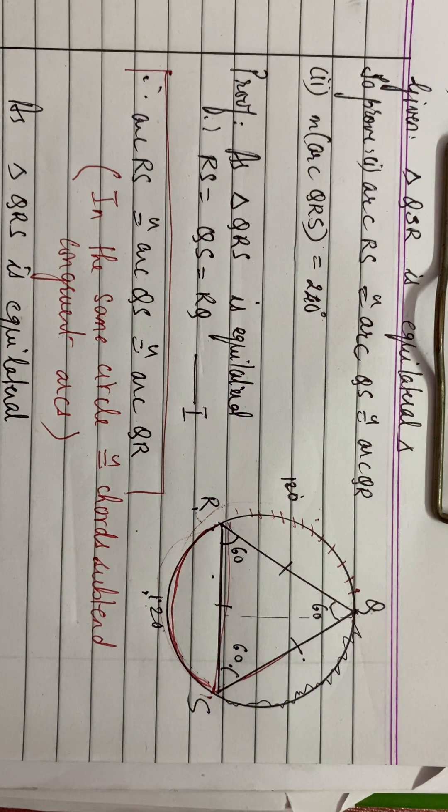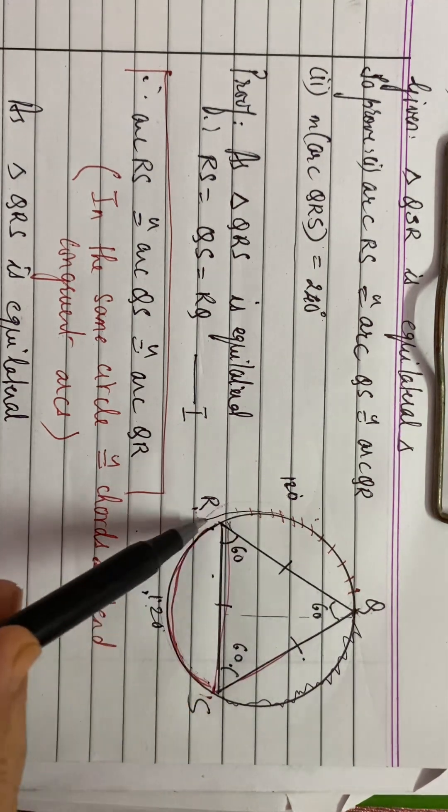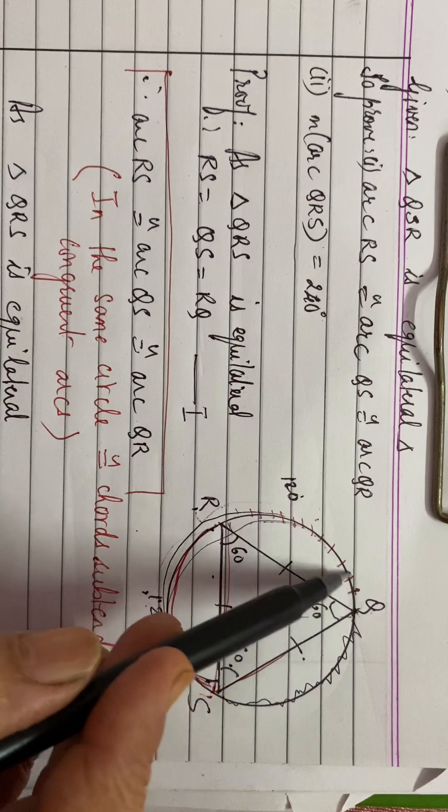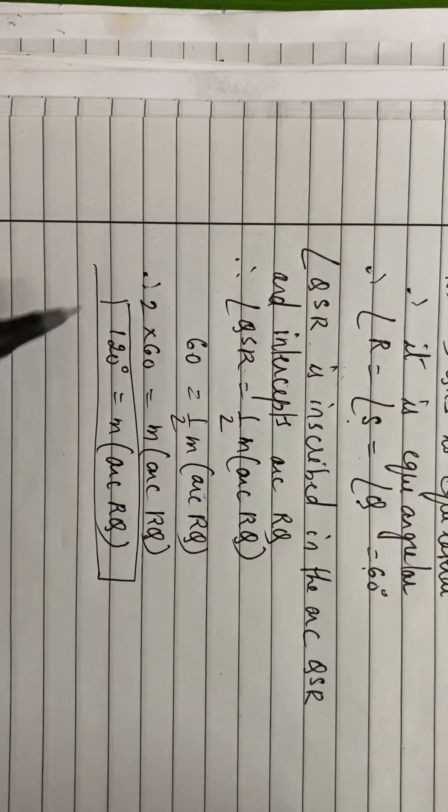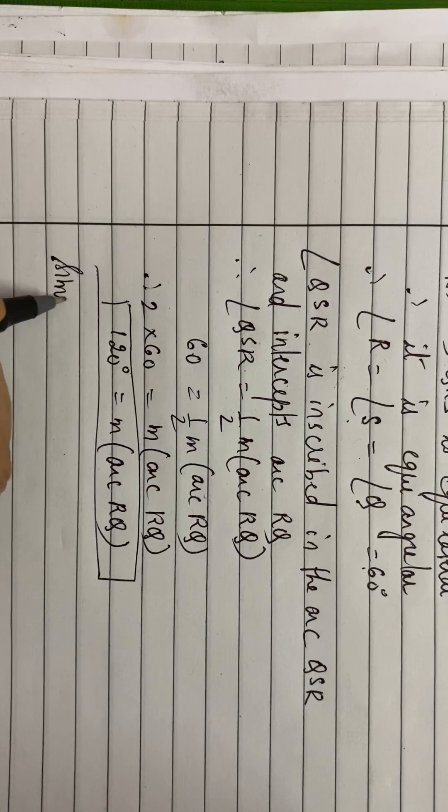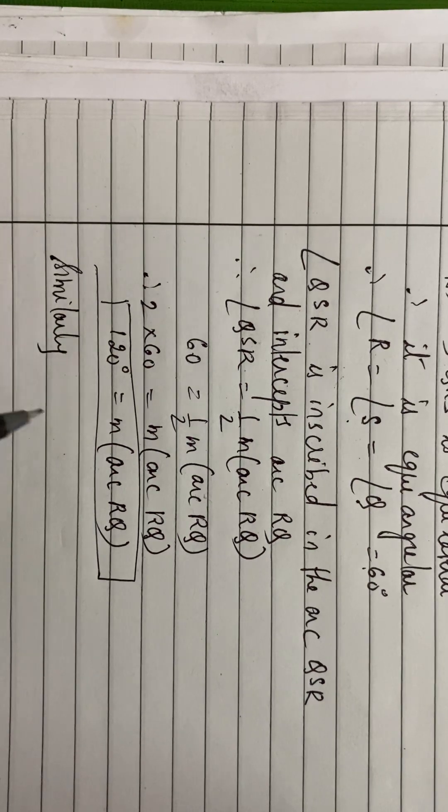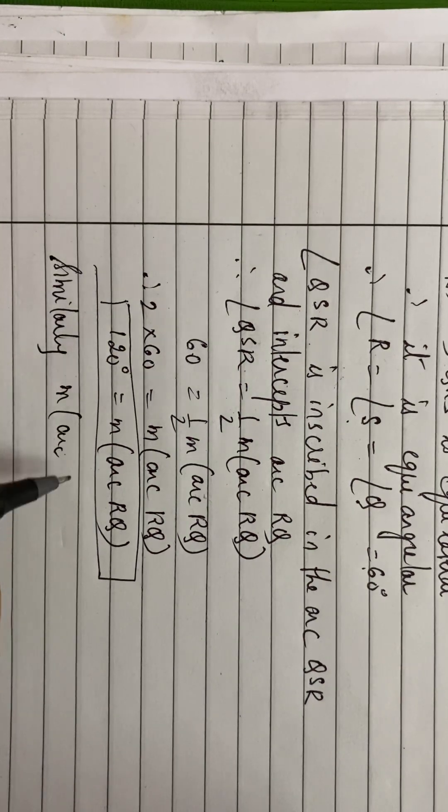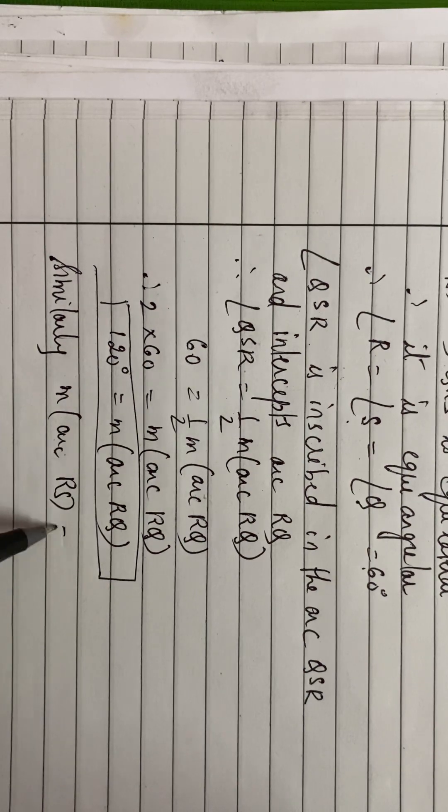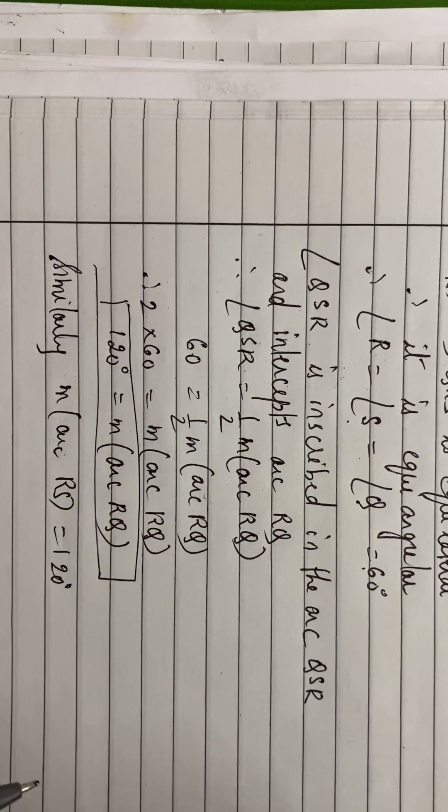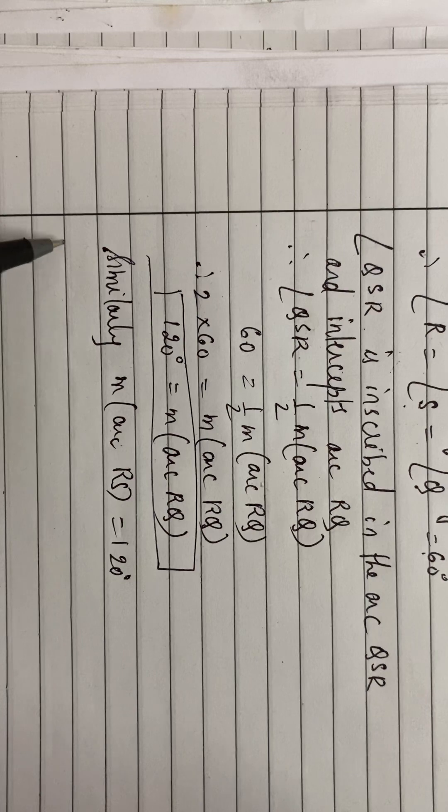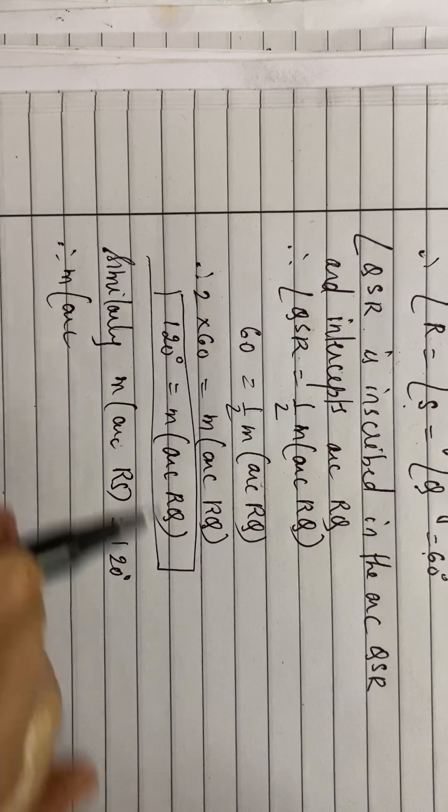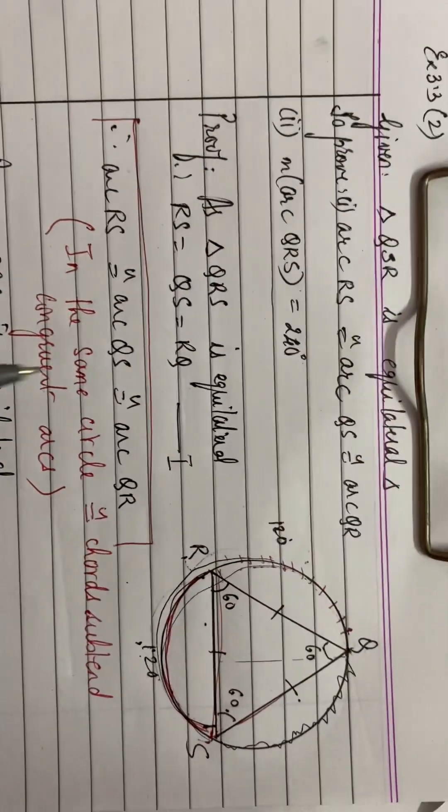120 plus 120 is how much? 240. And we need to find out this arc QRS. Getting that? So similarly, measure of arc RS is equal to 120 degrees. Therefore, what is measure of arc QRS?